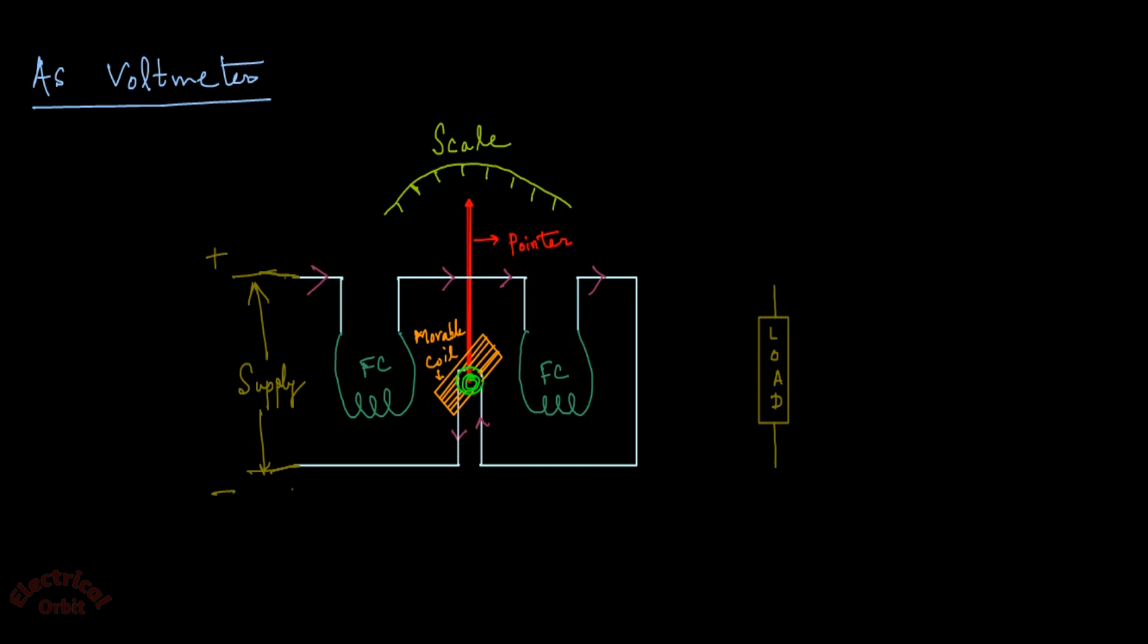As we are doing a parallel connection now, connect one part of this load to the positive part of the supply and another part of this load to the negative part of the supply. In that way we are creating the entire arrangement as parallel to the circuit.